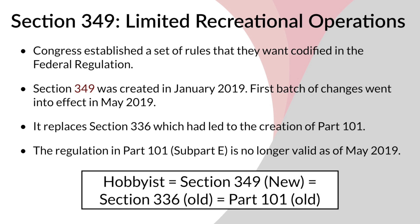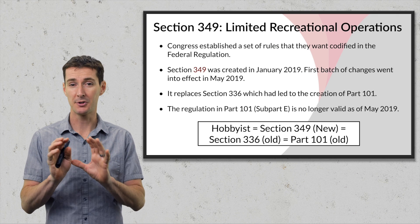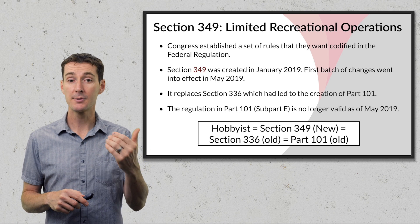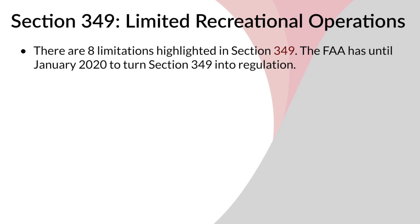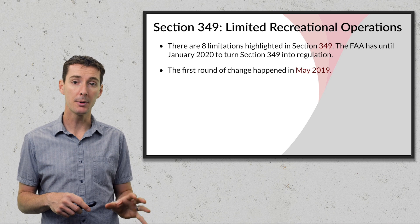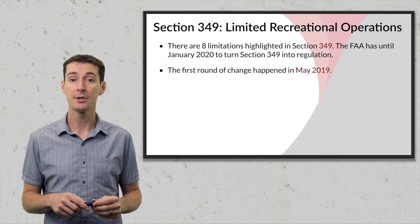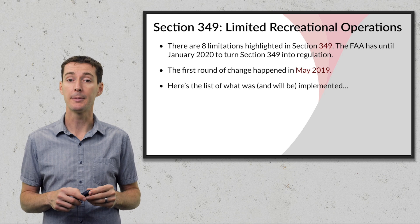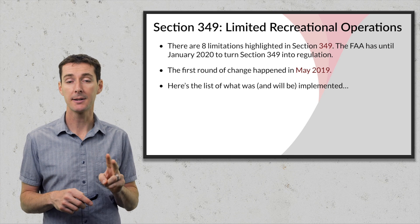In short, 'hobbyist' rules are now governed by Section 349, which is the new regulation, replacing Section 336 and Part 101. Under Section 349, the FAA highlighted eight different limitations that you need to follow. The FAA has until January 2020 to implement all eight. Some were already in the books, some are upcoming, and some just changed in May 2019. Two of them still have to be implemented.